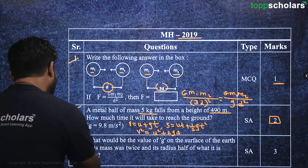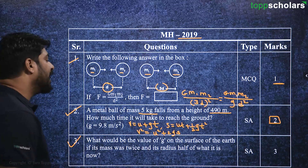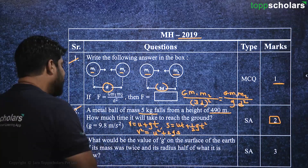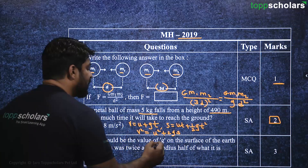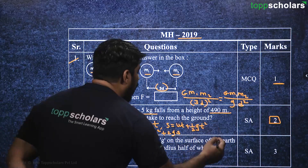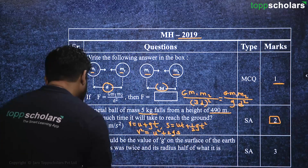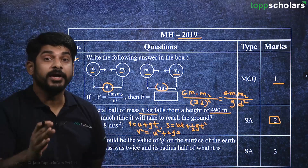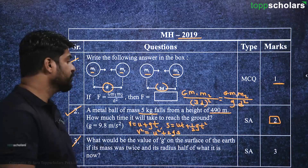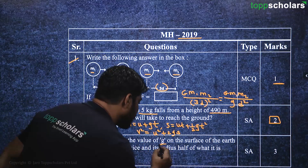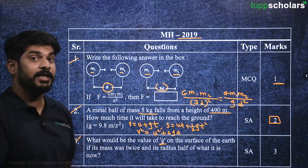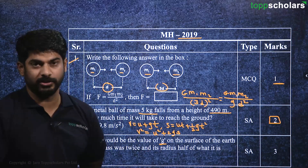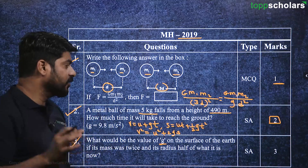Moving on to the next question: what would be the value of g on the surface of the earth if its mass was twice and its radius half of what it is now? Here we can use Newton's law of gravitation to find out the new value of g, since g depends on the mass of the earth and the radius of the earth.